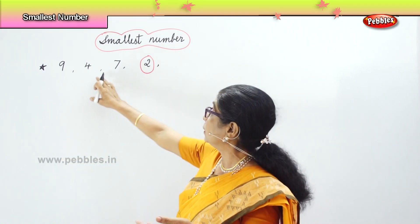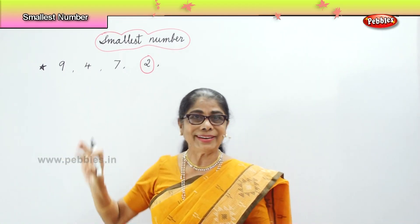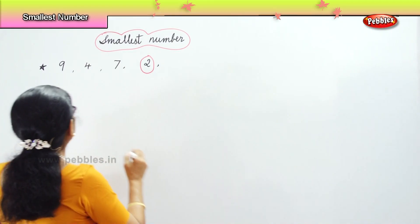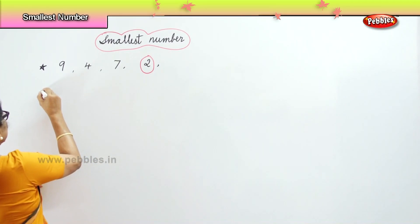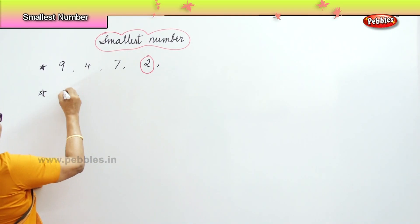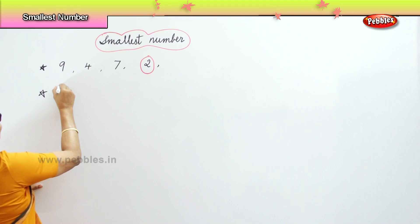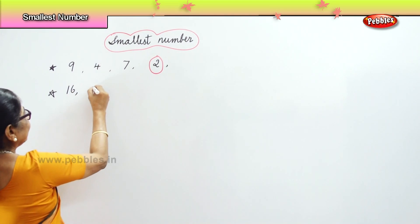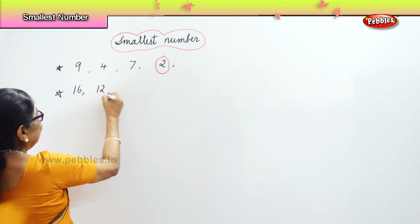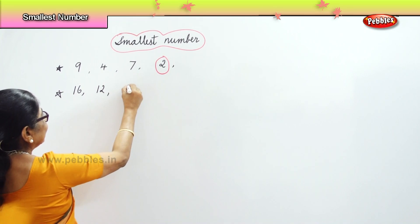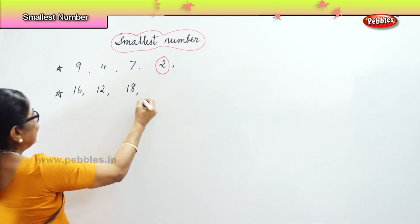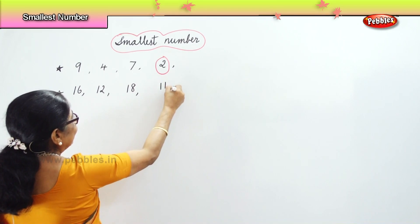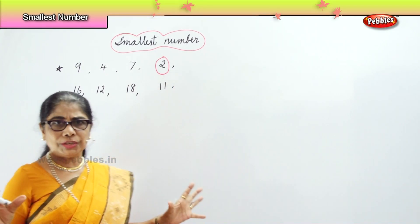She's got 9, she's got 4. Now, let's look at another lot of numbers. Here I give you 16, 12, 18, and 11.